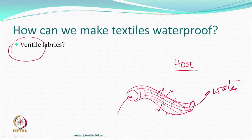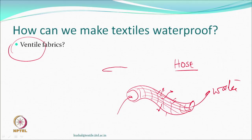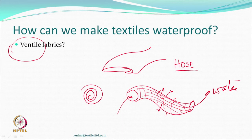Such fabrics were called ventile fabrics — they could otherwise let air pass through, as they have vents. One advantage was that a textile hose can be flattened and rolled up, requiring less storage space. When opened and water is passed through, it becomes cylindrical and after some time water may not come out from the sides at all. So ventile fabrics are one way of waterproofing, but there are other ways as well.